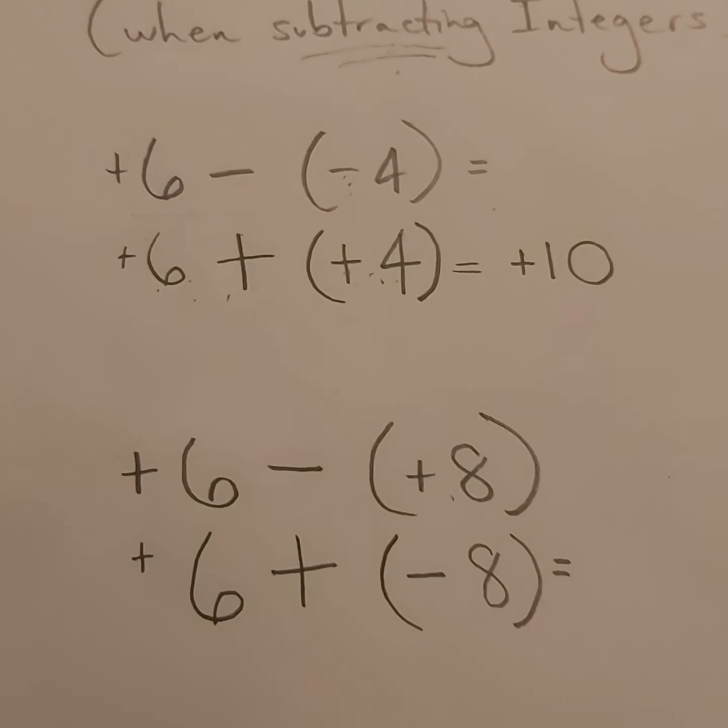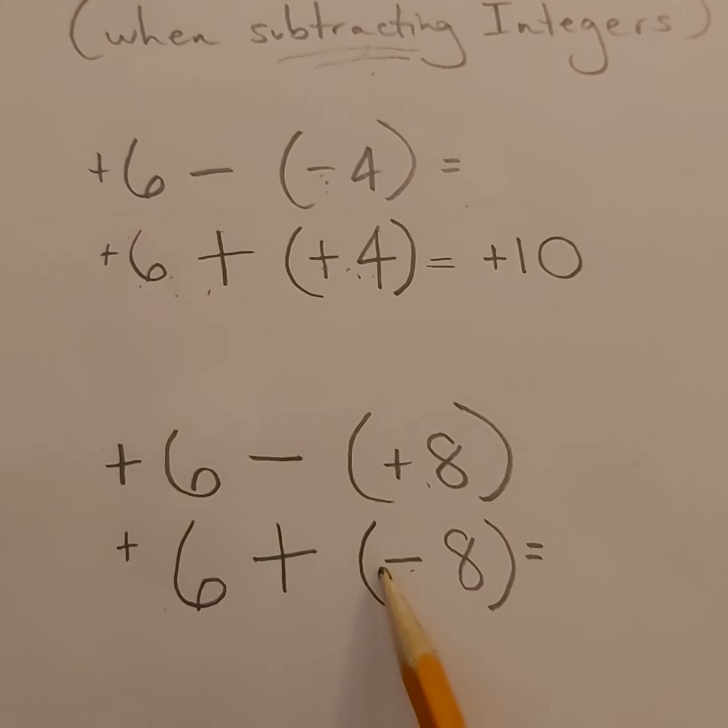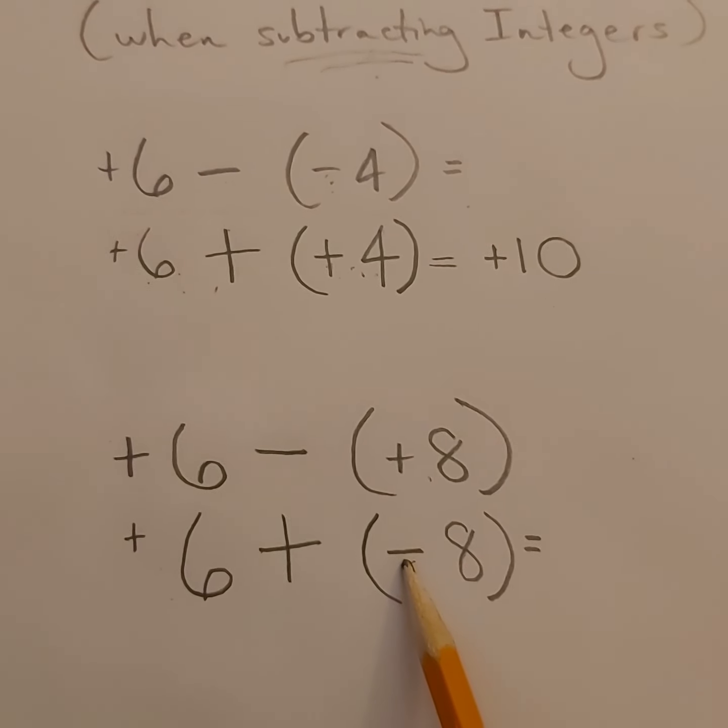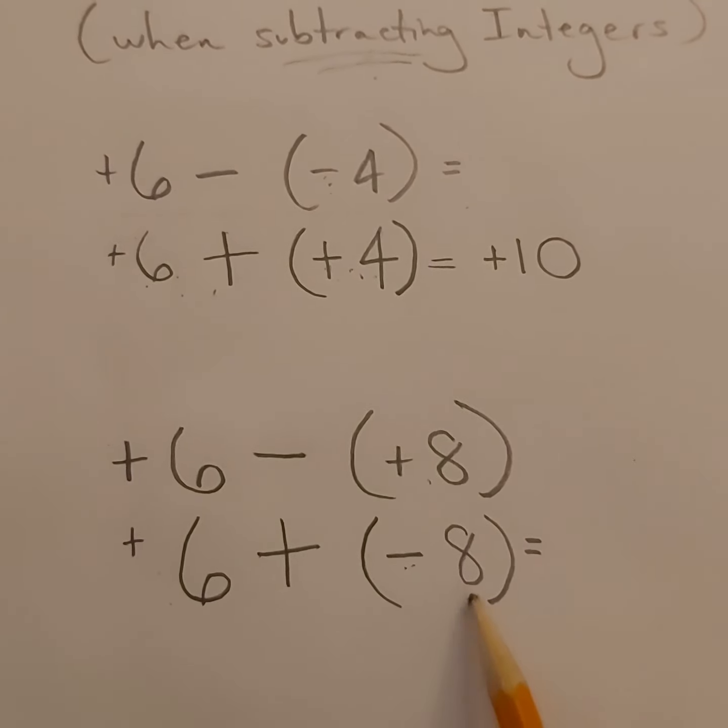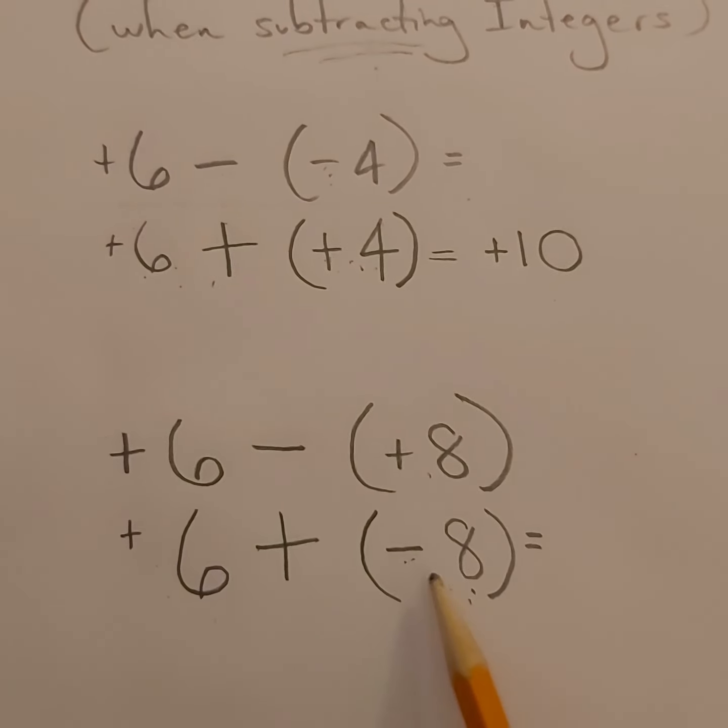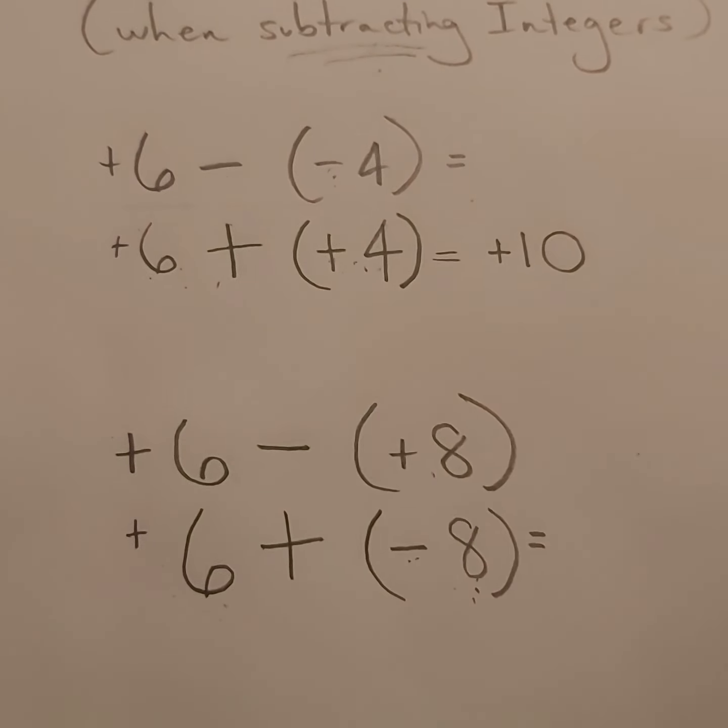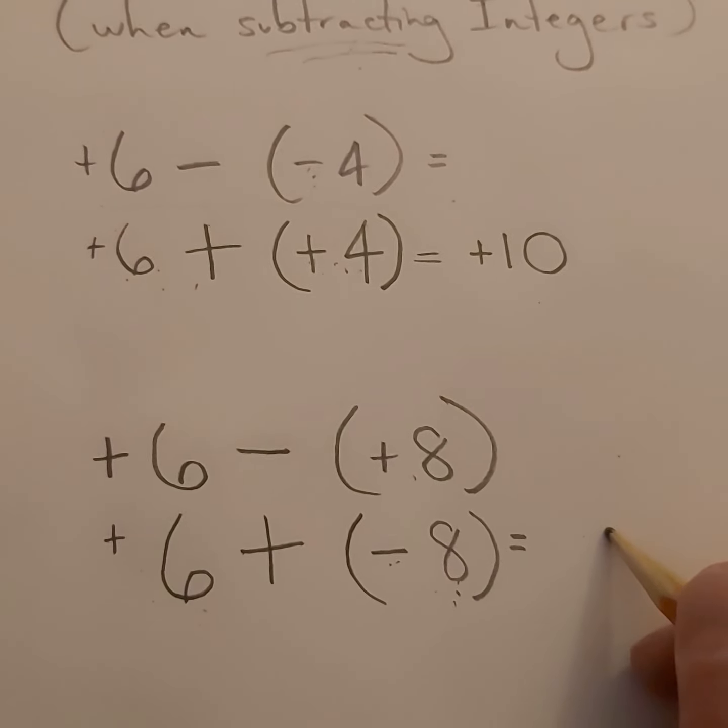And now I'm going to use my integer rules. So it's an addition, and the two numbers have opposite signs. They got different signs. So what I do is I take the larger of the two numbers, in this case, eight is larger than six. So I subtract. I do eight, take away six, which gives me an answer of two.